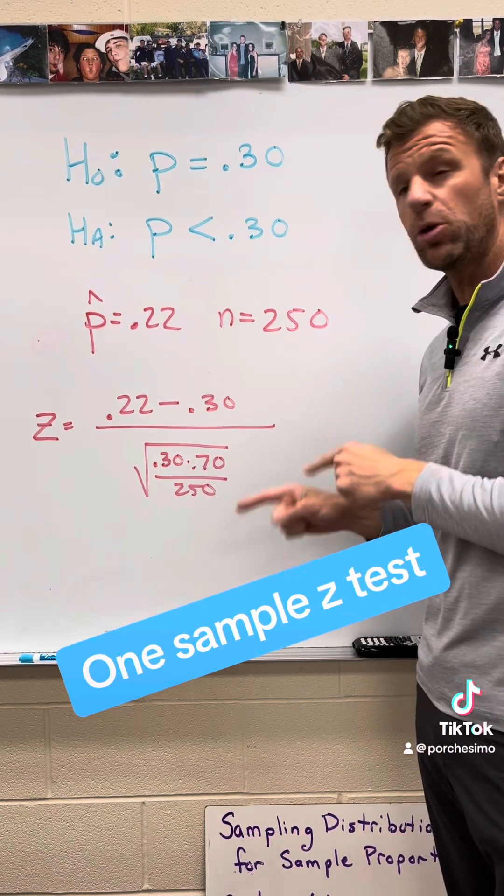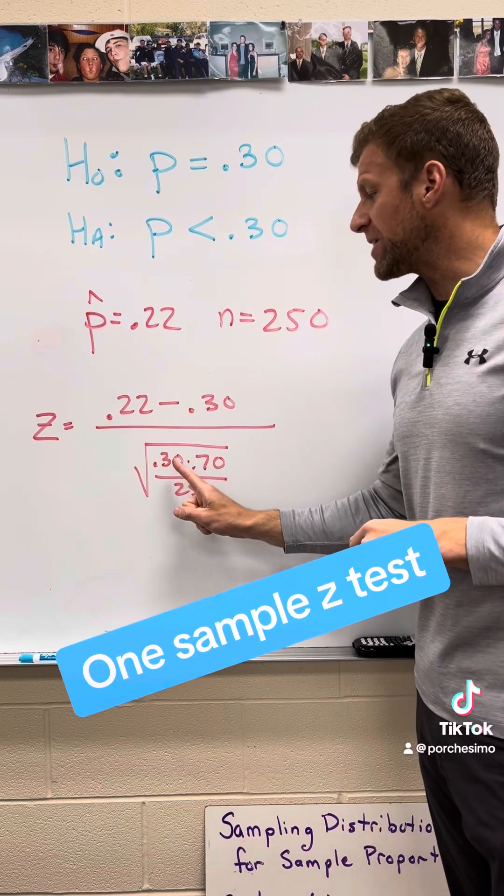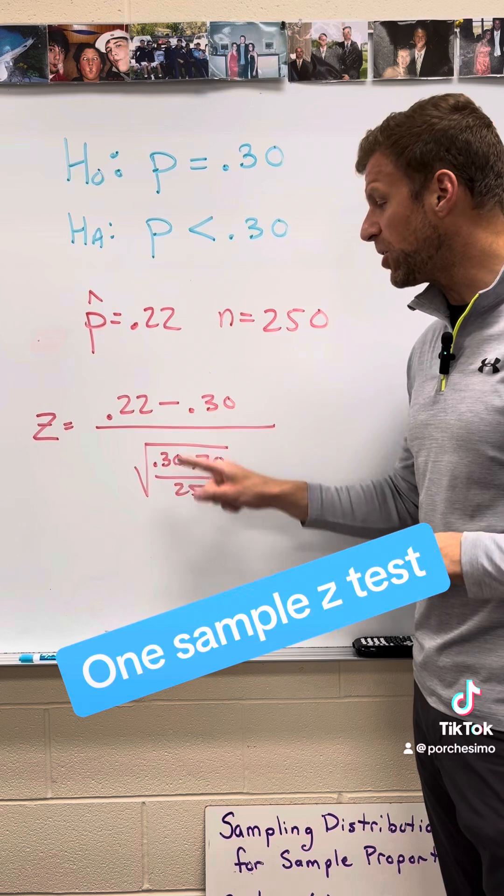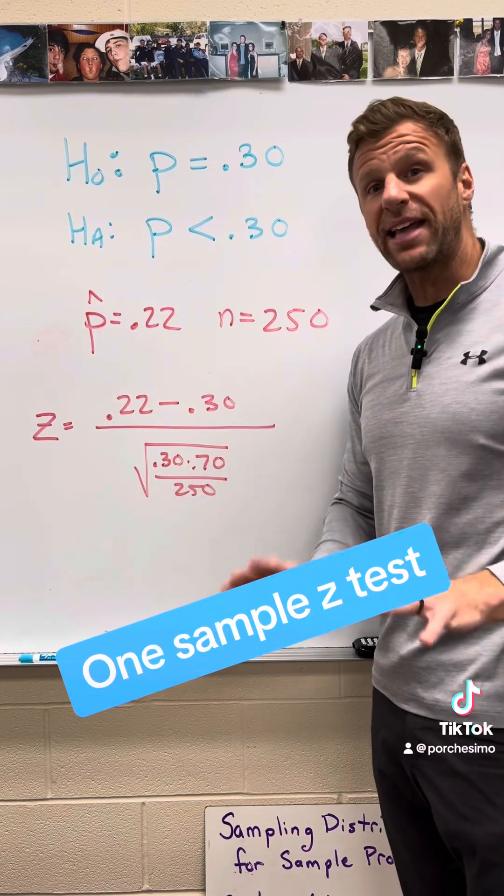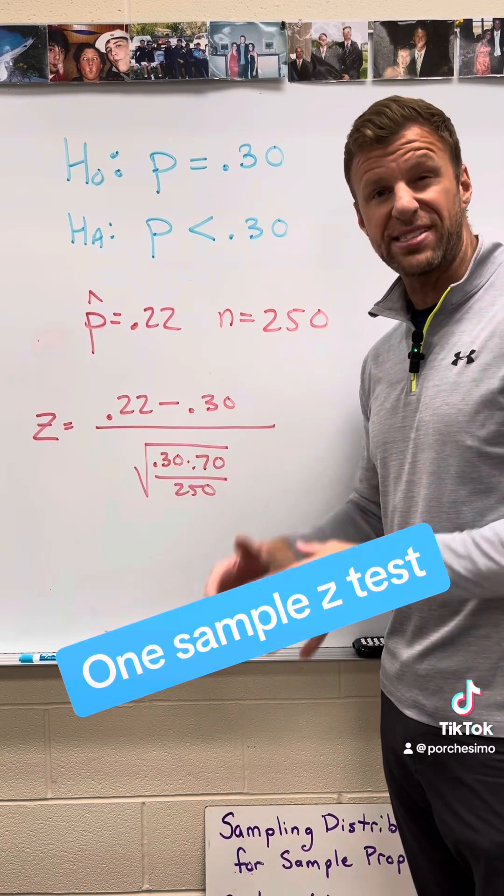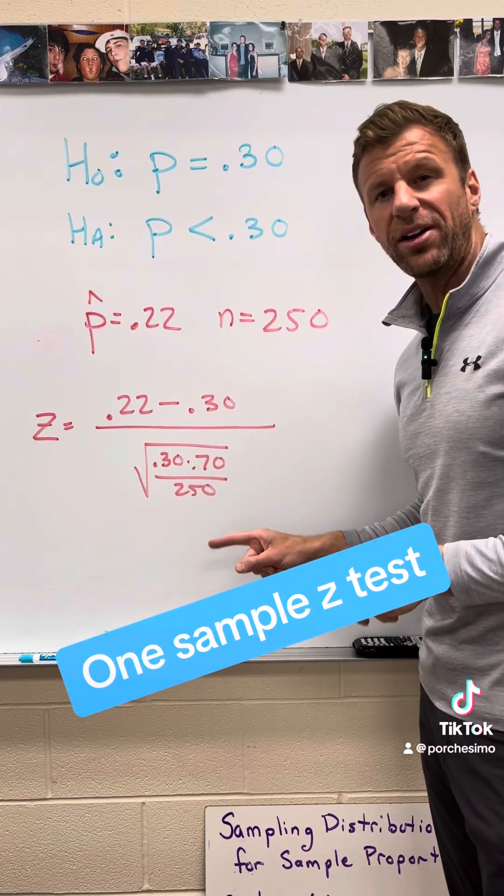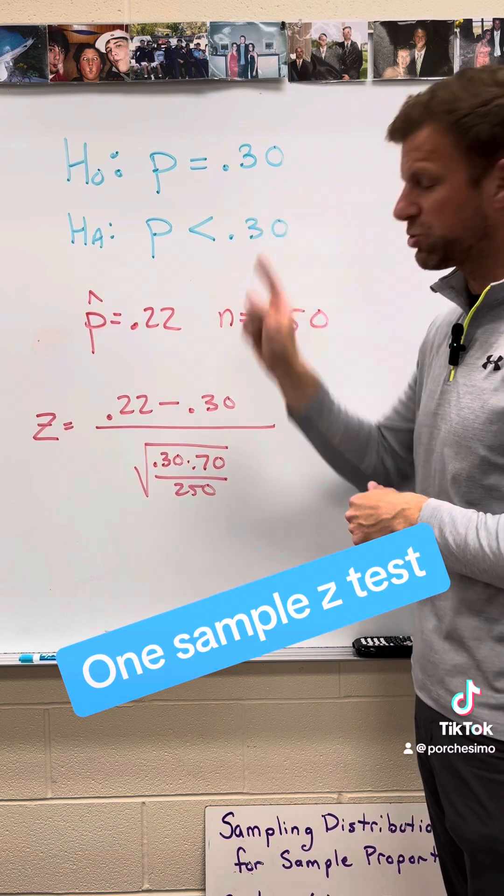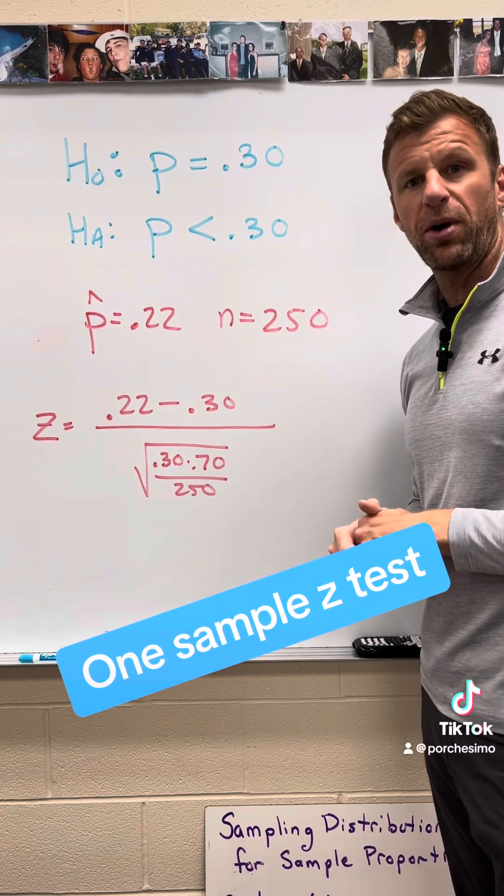Now we are supposed to assume that the null hypothesis is true. That's why I'm using the 0.3 and the 0.7 here in the standard deviation, not using the 0.22. That would be standard error, and I know that's kind of weird because the formula actually says that standard error should go down here. But this is one scenario where we are supposed to assume this is true. So we should be using 0.3 and 0.7 there.